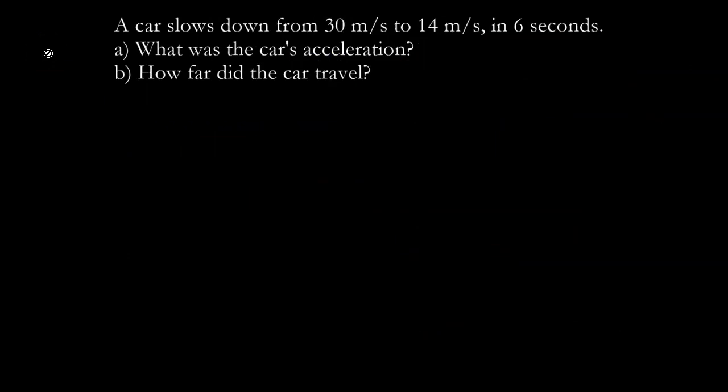Here's another kinematics problem we can use graphs to solve. It's good to be able to do them either way — with graphs or equations. A car slows down from 30 meters per second to 14 meters per second in 6 seconds. What was the car's acceleration?